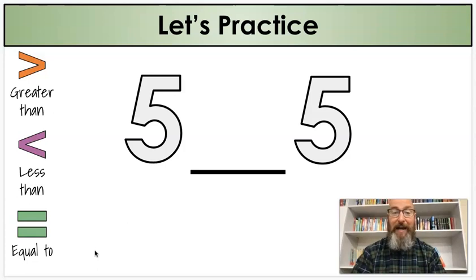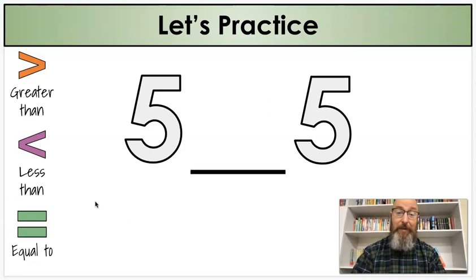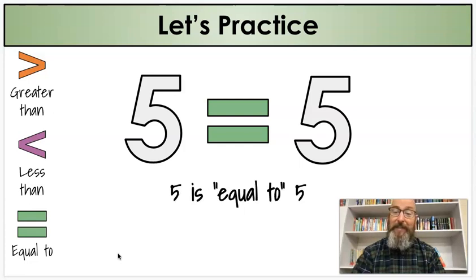Five and a five — which one would I pick? Greater than, less than, or equal to? If they're the same number, of course I would pick equal to. My sentence would be: five is equal to five.